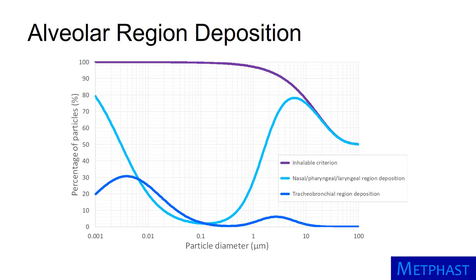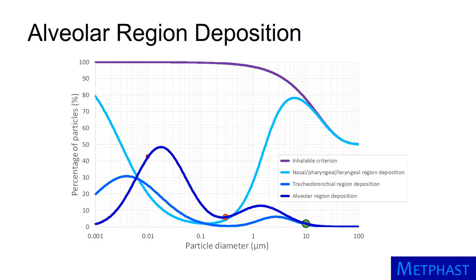Comparing deposition in the alveolar region to other regions: about 42% of the red 10 nanometer particles deposit in the alveolar region, primarily due to diffusion. Deposition is lower for larger particles — a little less than 6% of the orange 300 nanometer particles, and about 2% of the green 10 micrometer particles deposit in the alveolar region. Deposition of the 10 micrometer particles is so low in part because so few of these particles remain by the time inhaled air reaches the alveoli. The dark blue curve shows the percent of particles deposited in the alveolar region for all particle diameters. Deposition of nanoparticles smaller than about 20 nanometers declines as diameter decreases because these particles deposit in the nasal pharyngeal-laryngeal and tracheobronchial regions.